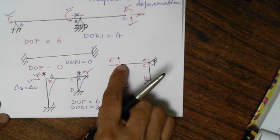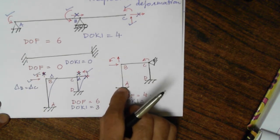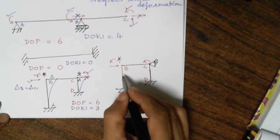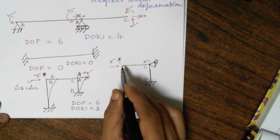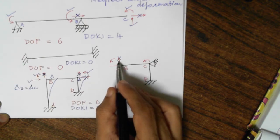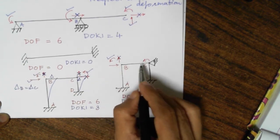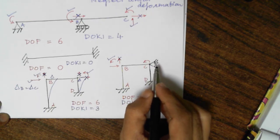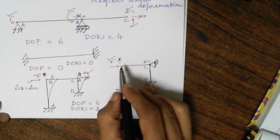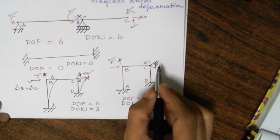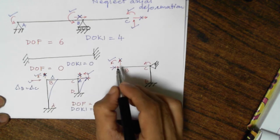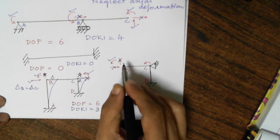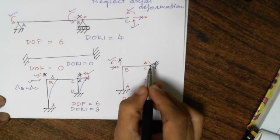Now what about joint B? Since column A-B is non-deformable, there is no possibility of A moving in y direction, so there is no possibility of B moving in y direction — no axial deformation of A-B is possible, and since A is not moving downwards, B will also not move downwards. So this is not possible. Rotation at B — yes, it is independent and possible. Now look at beam B-C: C will not deflect in x direction since it is supported. Since B-C length is axially non-deformable and C is not moving in x direction, there is no question of B moving in x direction either. B cannot move in x direction because of support C, and B cannot move in y direction because of column A-B.